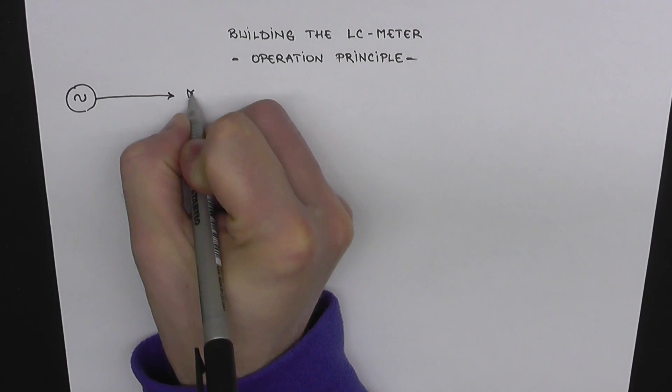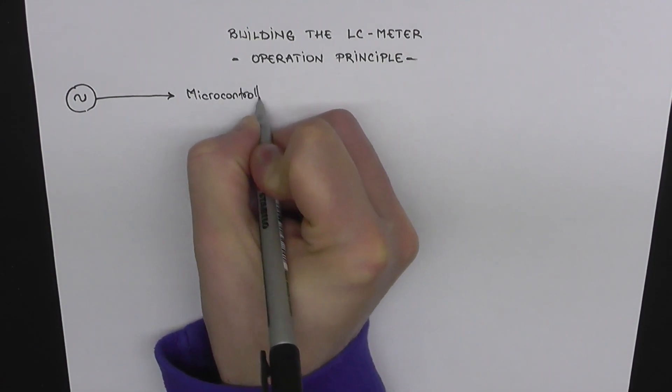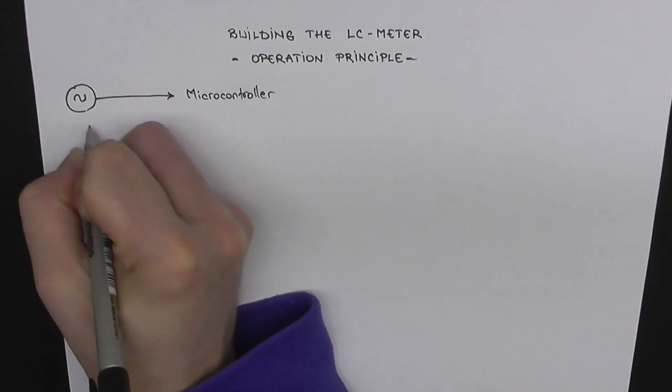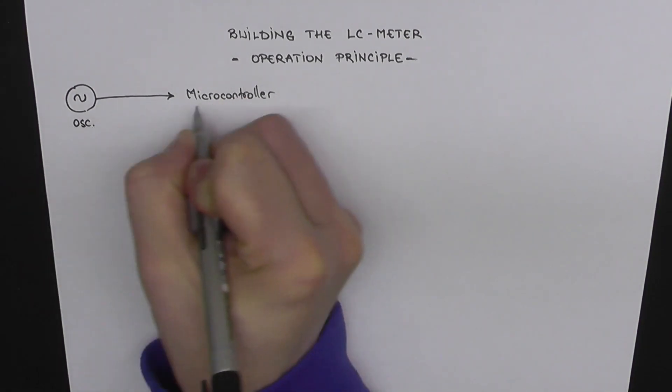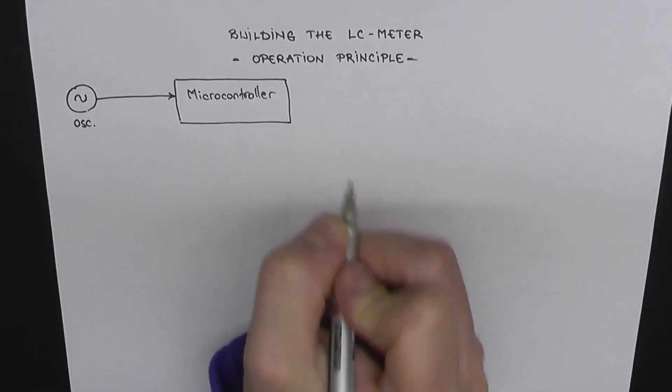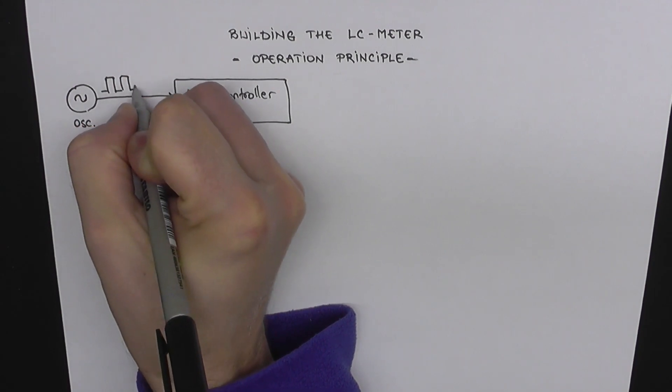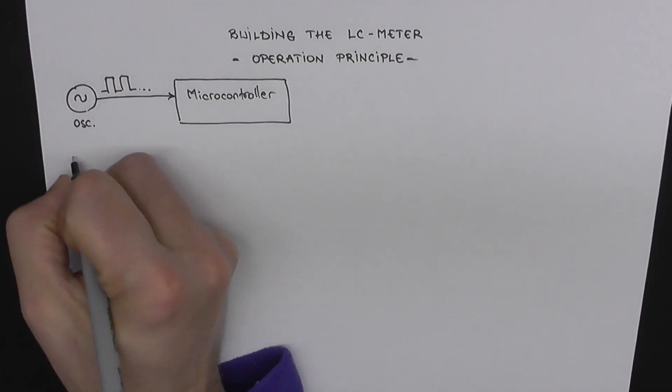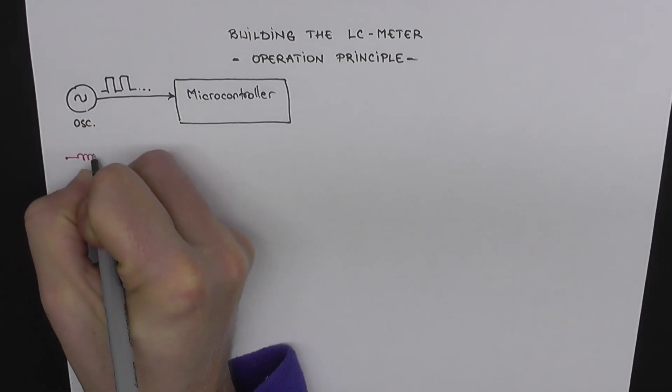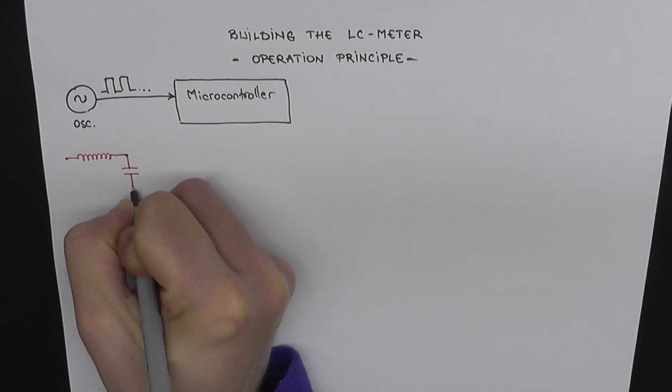So let's go ahead and see how everything works, the building blocks of the project. So we have this oscillator here and a microcontroller. The oscillator will output a signal with a specific frequency, and we're going to measure the frequency using the microcontroller. By the way, I'm using a dedicated chip for this, but to make it easier to understand, I'm only drawing the tank circuit, the inductor-capacitor oscillator here.